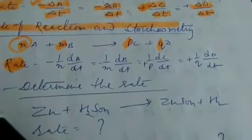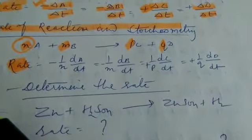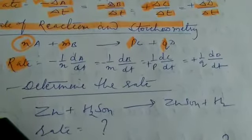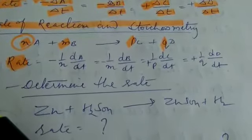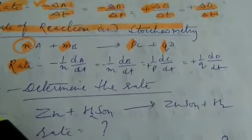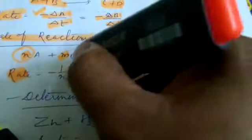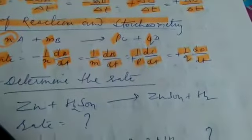Now, how these coefficients will be used while expressing the rate of reaction. The rate of reaction is divided by coefficient of the component or reactant or product, like this: 1 upon n dA upon dT, 1 upon m dB upon dT, 1 upon p dC upon dT, and 1 upon q dD upon dT.